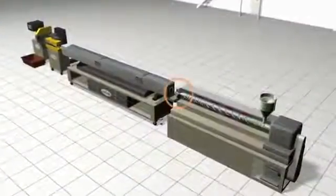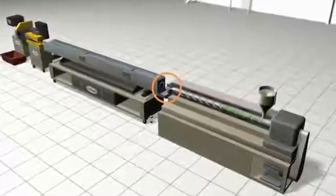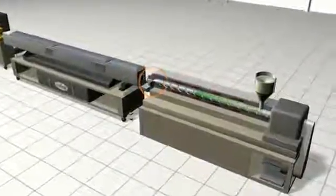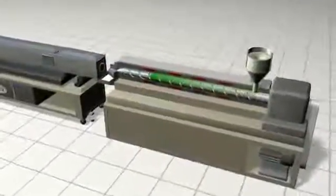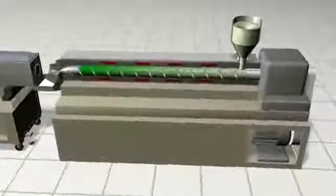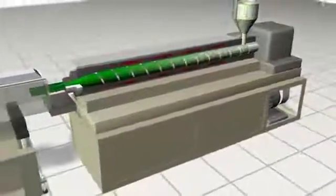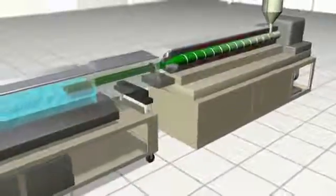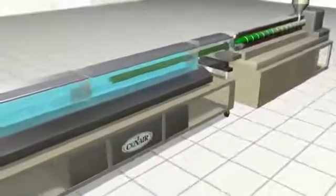Extrusion uses a die, a hollow form that molten plastic is pushed through to create its specific shape and thickness. A water bath or spray chamber then cools the extruded shape and often provides pressure and vacuum controls to properly size the product as it passes through.